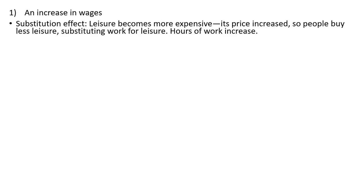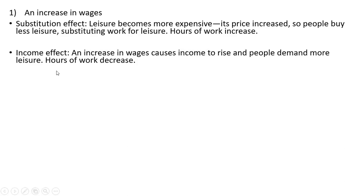Let's now look at the substitution effect and income effect from an increase in wages. Starting with the substitution effect: if wages go up, the price of leisure increases. Leisure becomes more expensive, so people buy less leisure, substituting work for leisure — this means hours of work will increase. That is the substitution effect of a wage increase. With the income effect, an increase in wages causes income to rise, and people demand more leisure, meaning hours of work decrease.